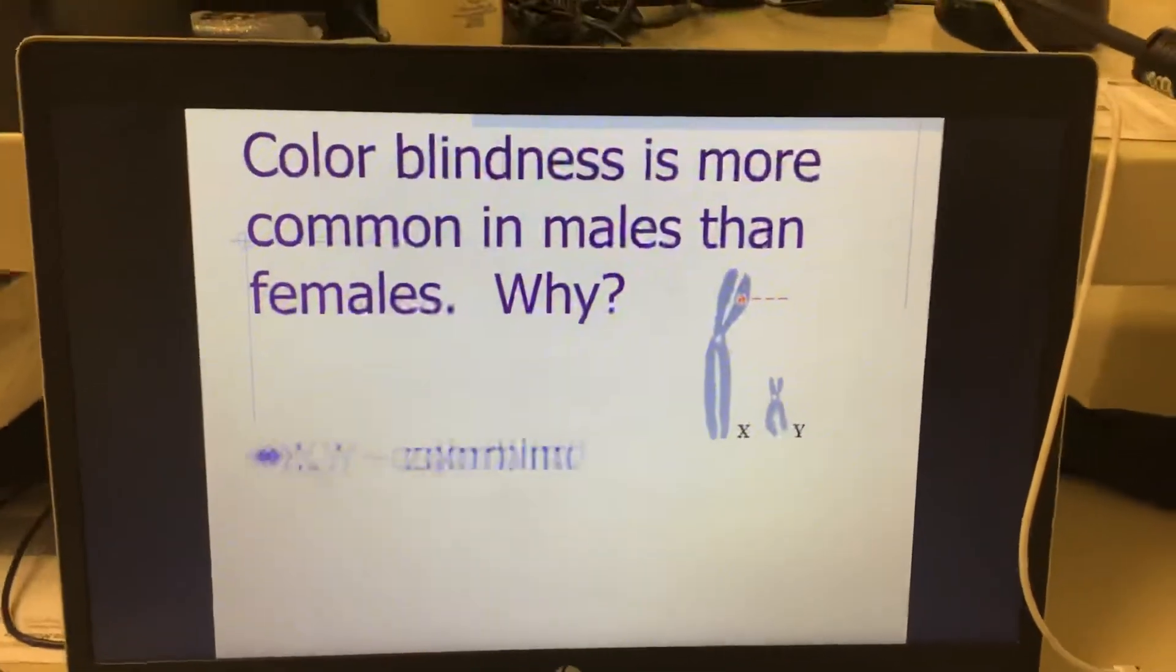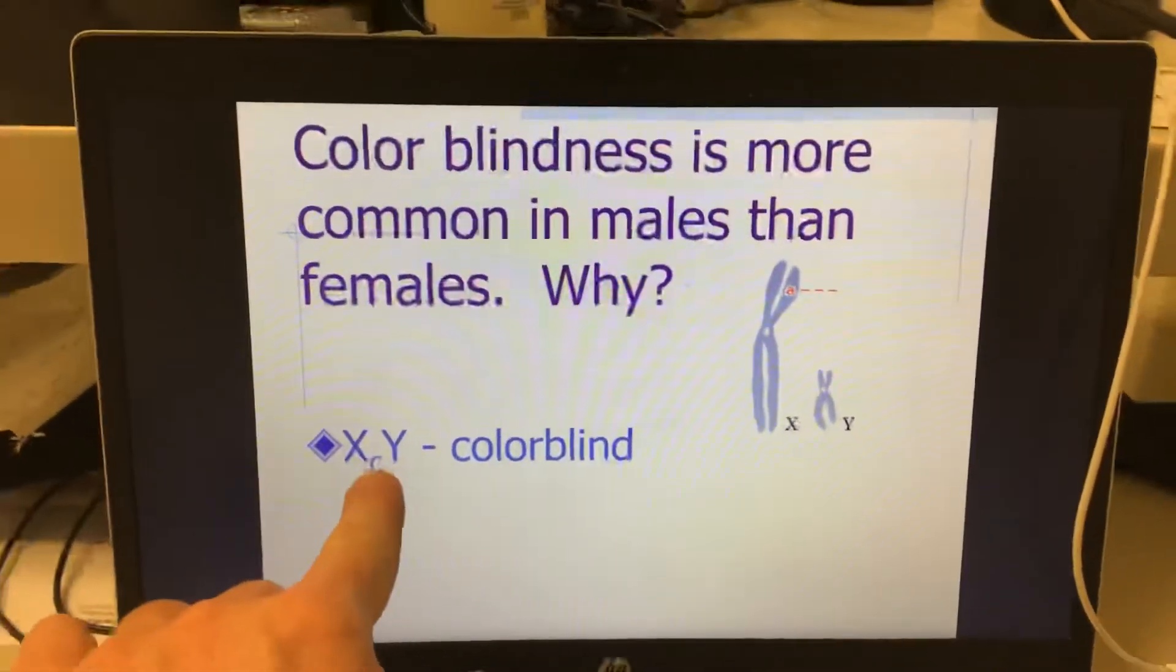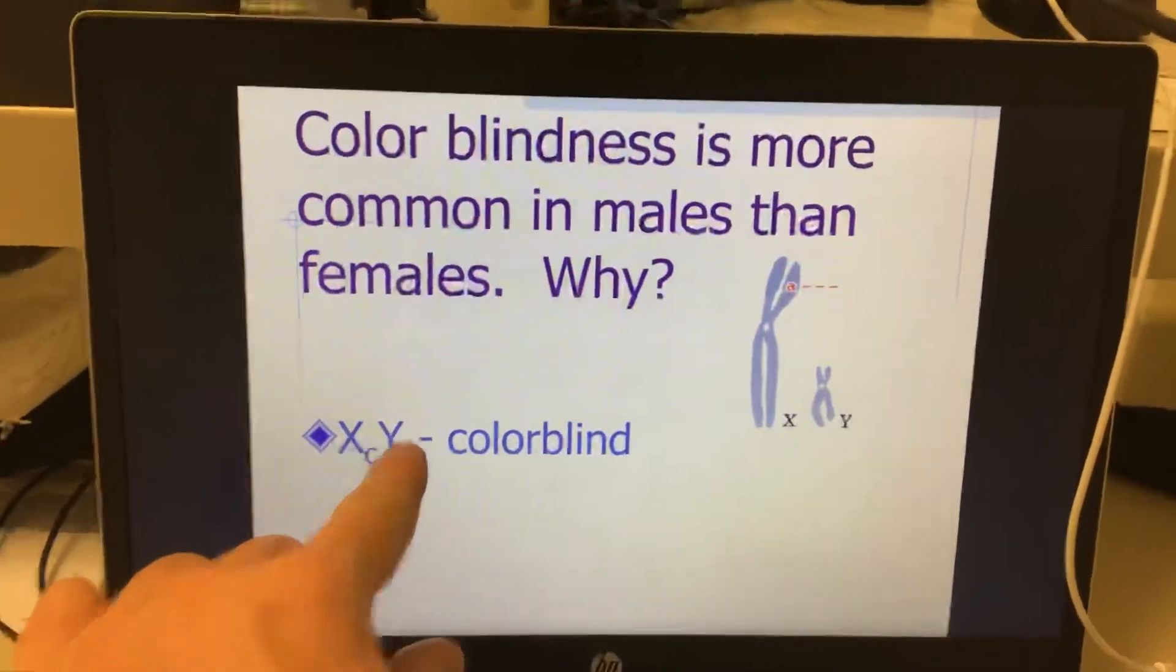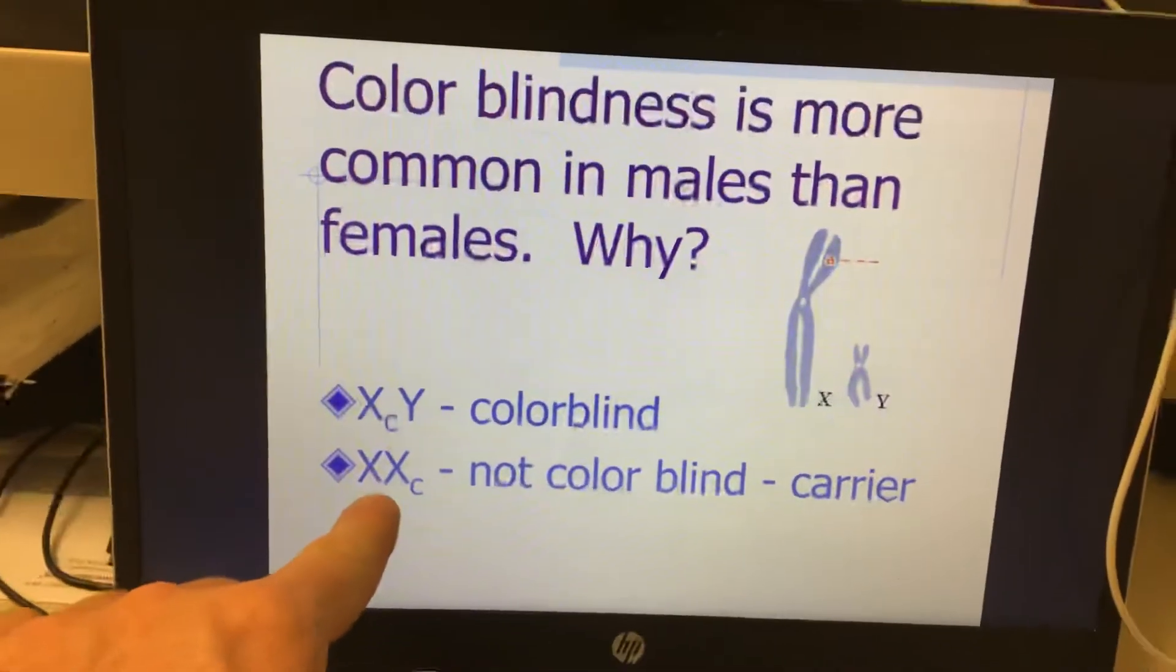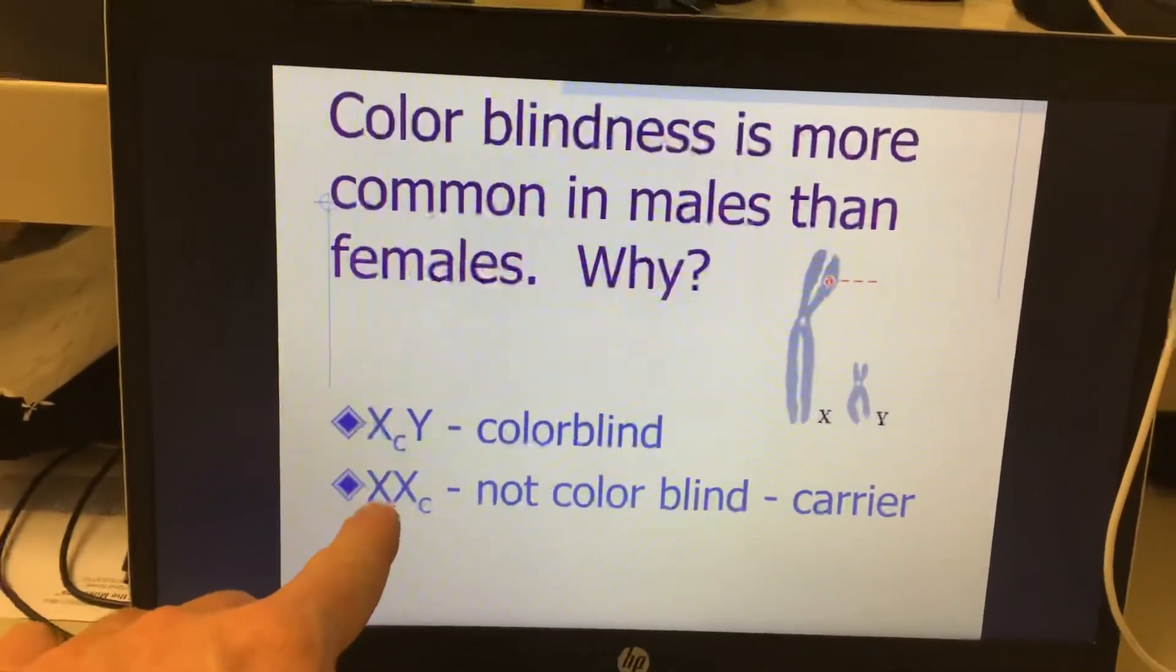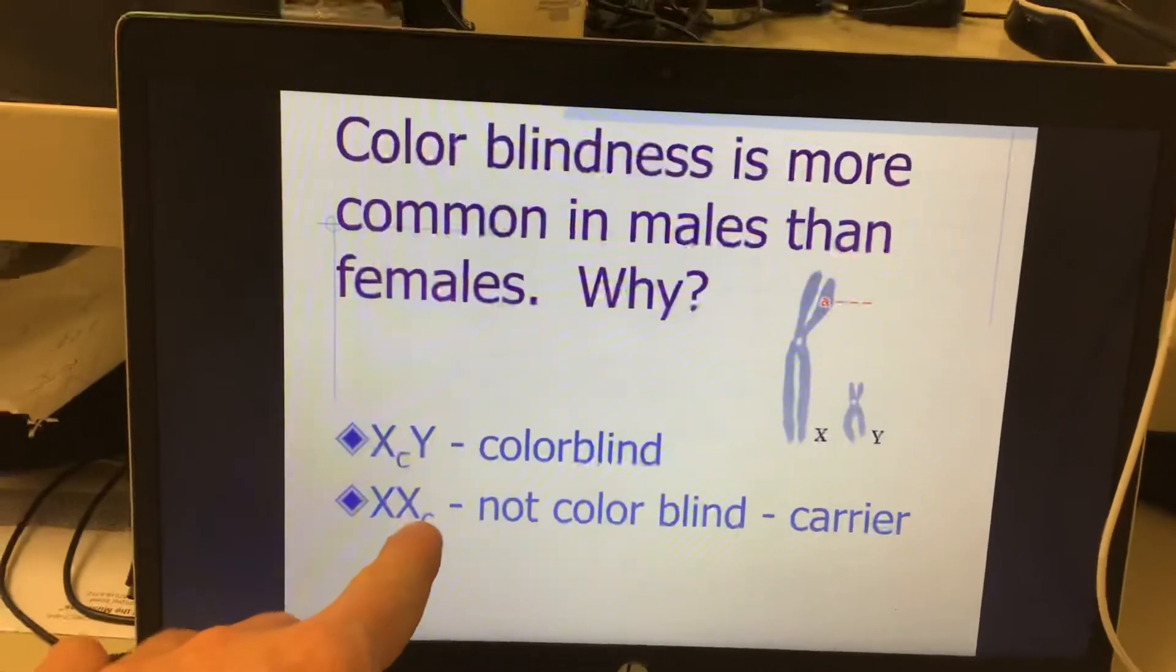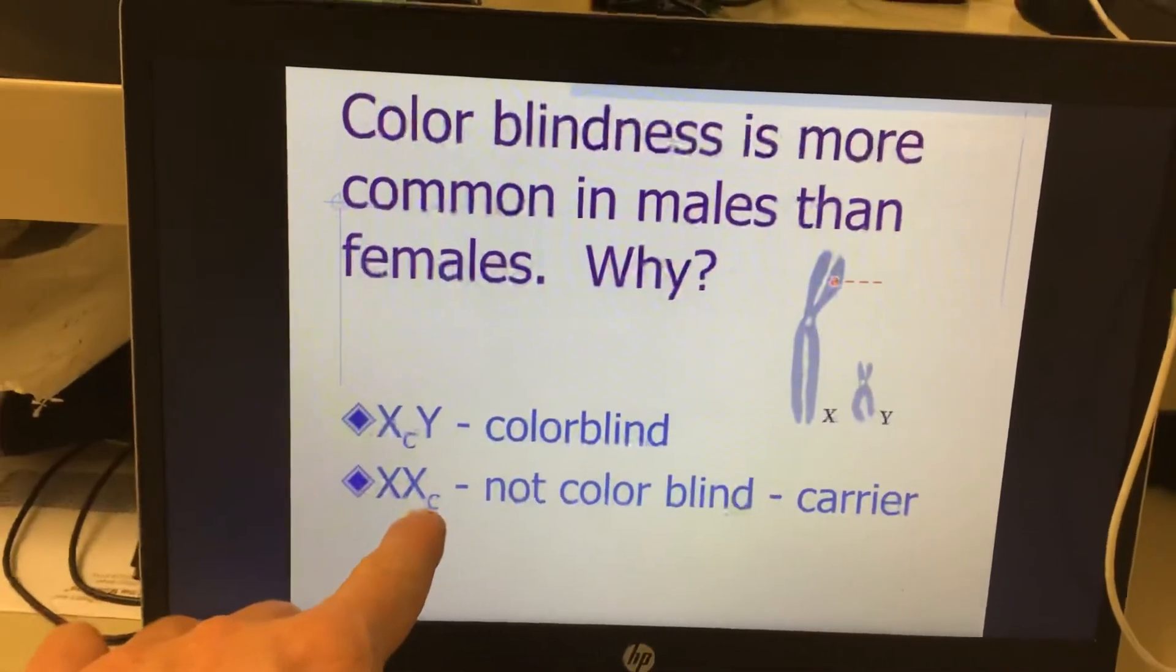More common in males. This right here is a colorblind male. Its X chromosome has the colorblind gene, and then its Y is regular. This would be a carrier female. It's not colorblind, it's a carrier. It has one healthy X and one colorblind X. What happens is that healthy X is going to cover up the colorblind X. The healthy X covers up the colorblind one.